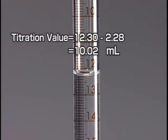The titration value is obtained by subtracting the initial reading from one at the end point.